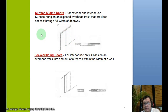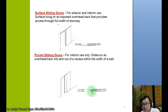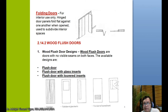Then you have the pocket sliding door, which is good only for interior use. It slides on an overhead track into and out of a recess within the width of a wall. If you have a pocket sliding door, it inserts into the wall before you can use the entire opening. Always remember that it is good for interior use only.